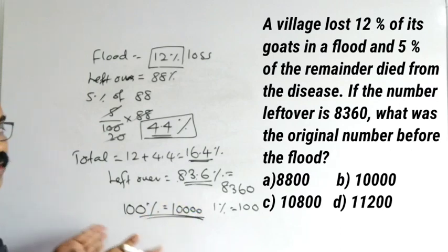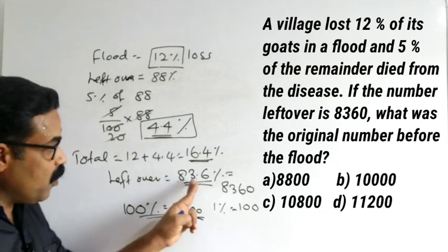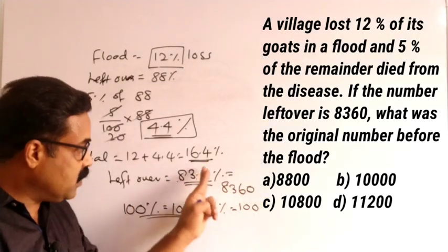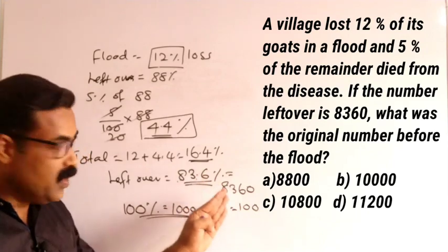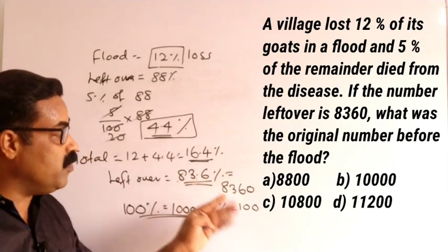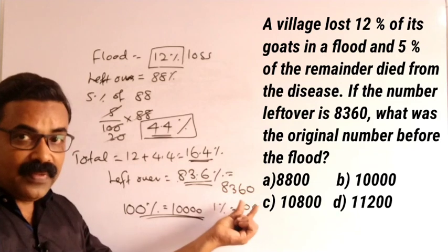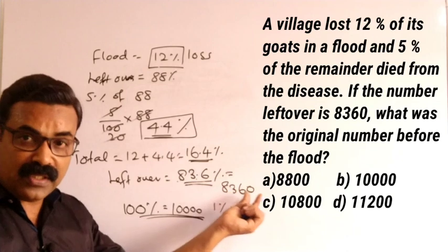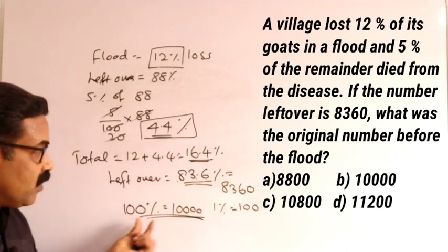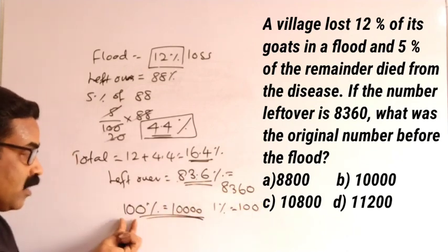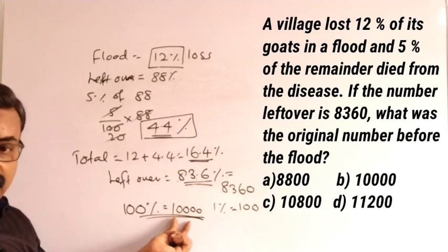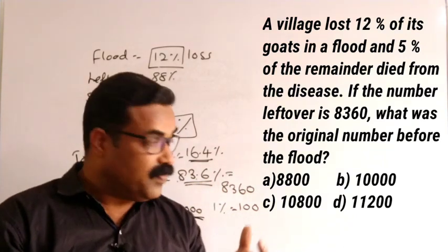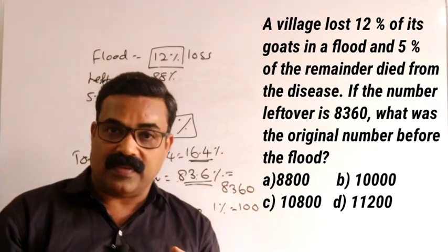Here is the shortcut method: 83.6 percentage equals 8360. Percentage means division by 100, so one percentage equals 100. When one percentage is 100, then 100 percentage equals 10,000. So from the given options, 10,000 is the correct answer.